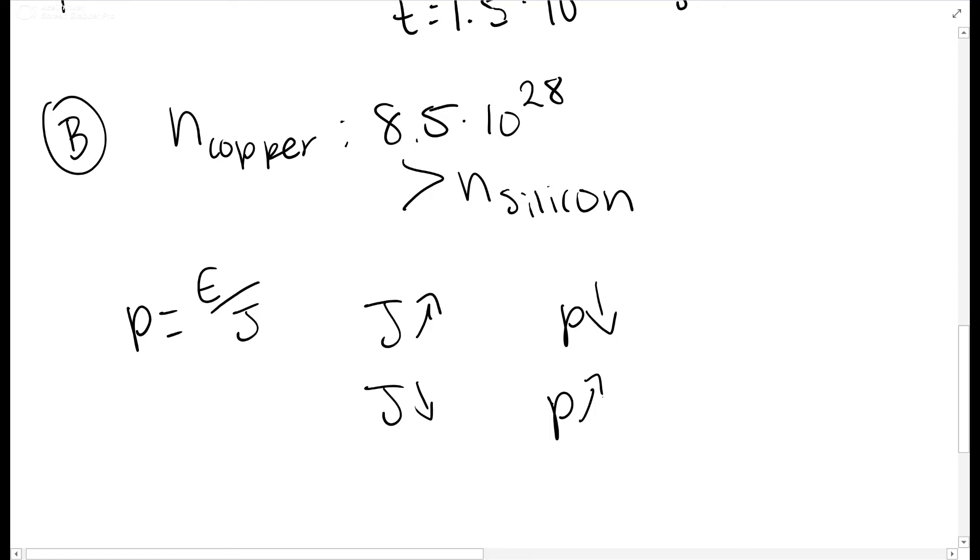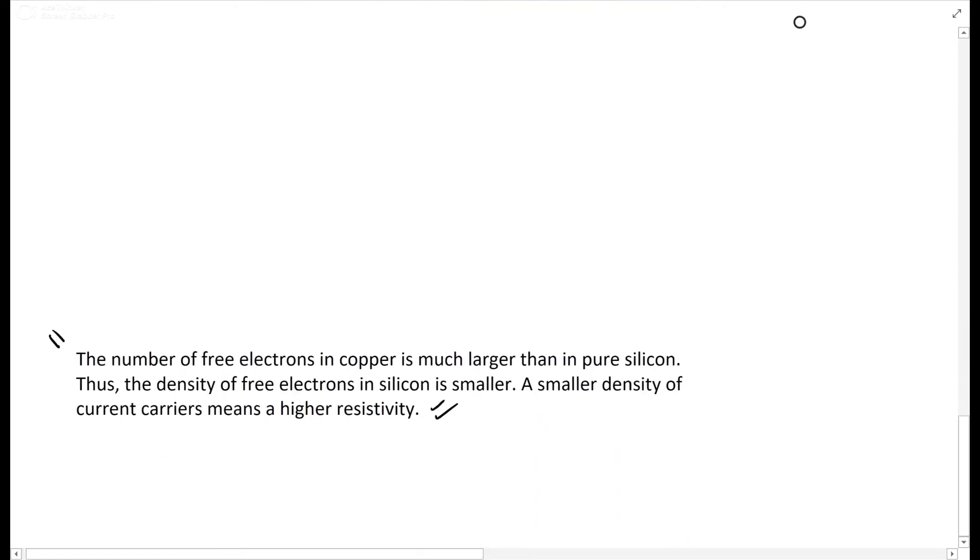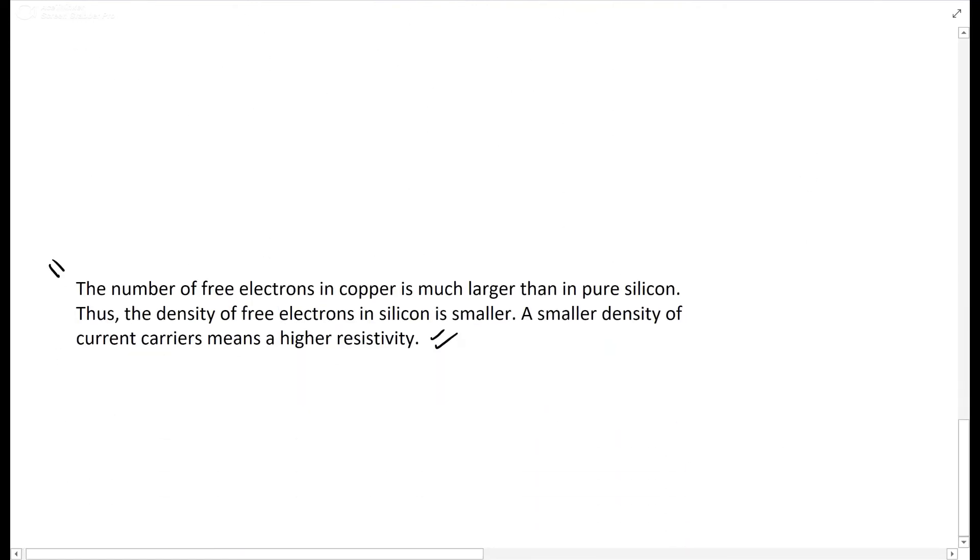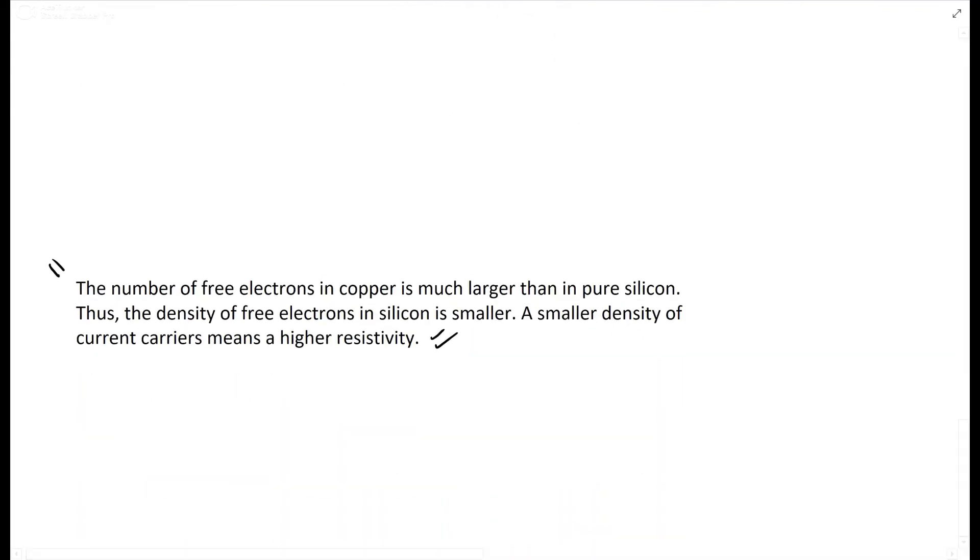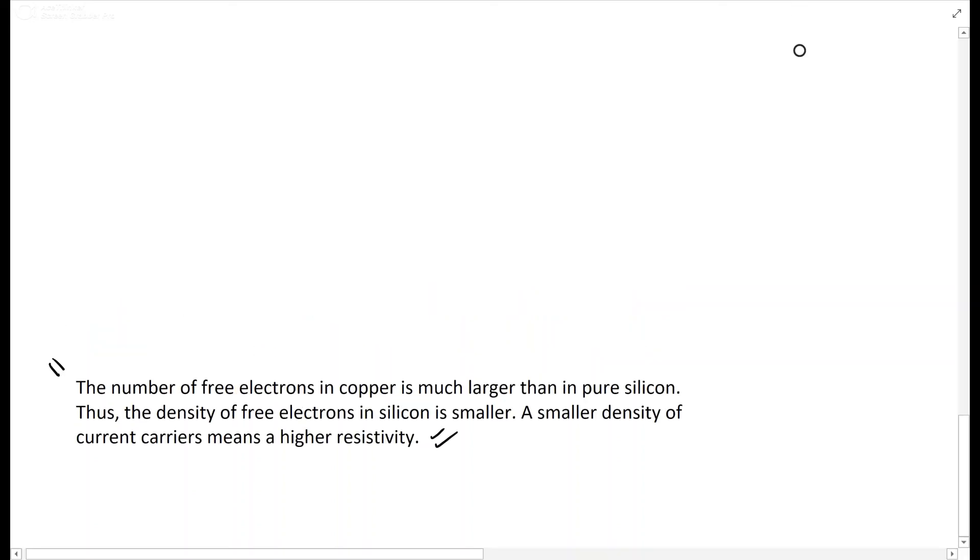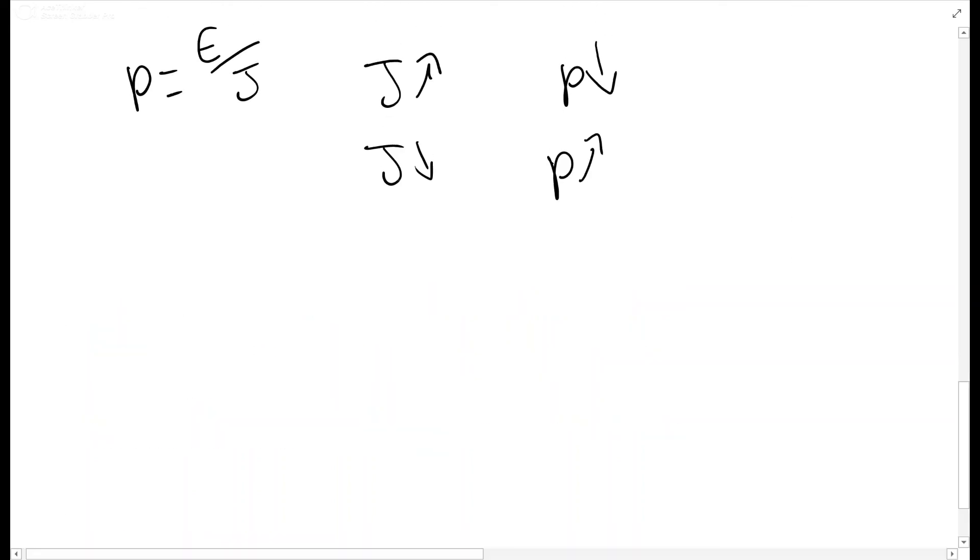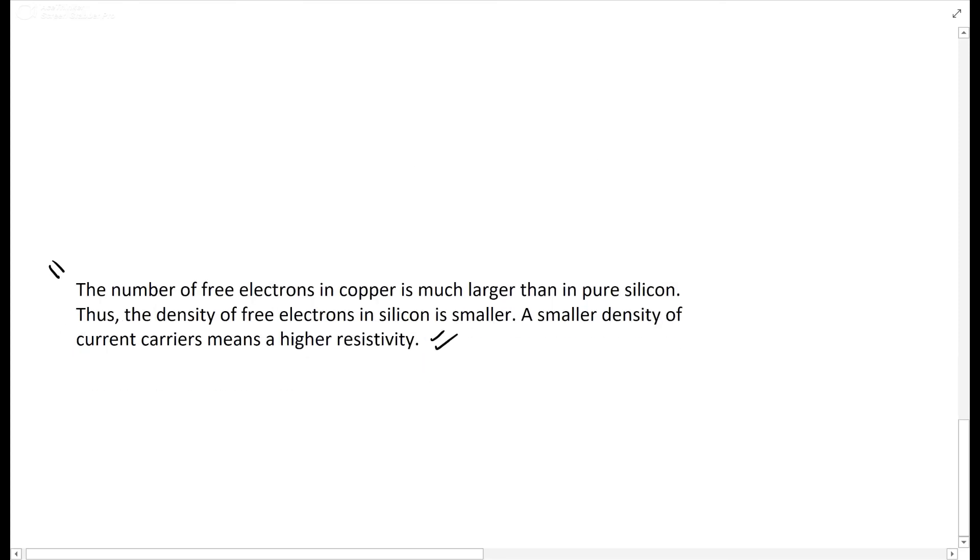The answer is: the number of free electrons in copper is much larger than in pure silicon. Thus, the density of free electrons in silicon is smaller. A smaller density of current carriers means a higher resistivity. That's the answer for part B.